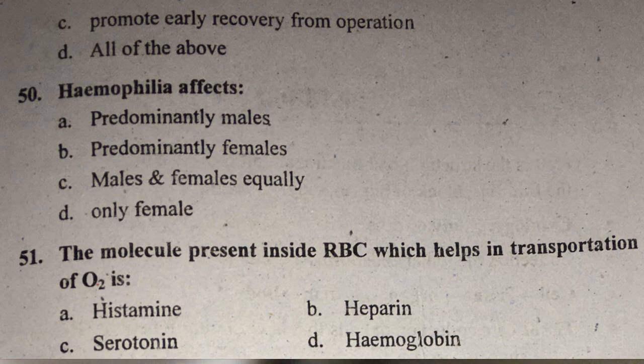Question fifty-one: The molecule present inside RBC which helps in the transportation of oxygen is what? The answer is hemoglobin — composed of heme and globin. Hemoglobin combines with oxygen to form oxyhemoglobin, which transports oxygen and then releases it to tissues.